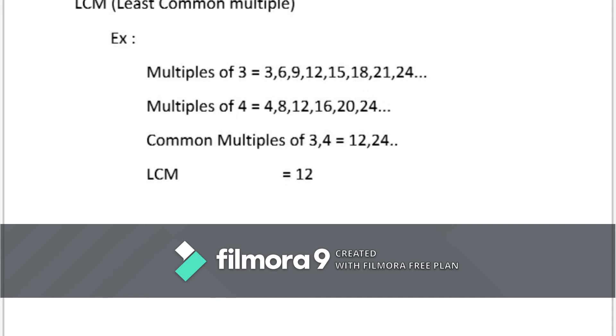From these, we know how to find the common multiple of 3 and 4 which is equal to 12 and 24 and so on. Here, the smallest number is 12. So, the least common multiple of 3 and 4 is equal to 12.